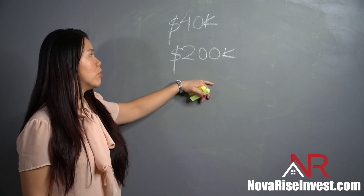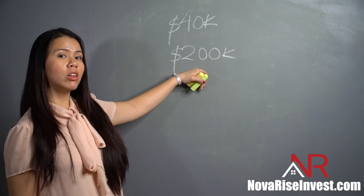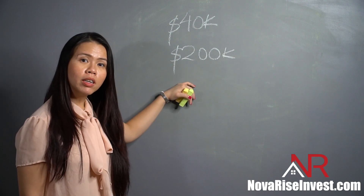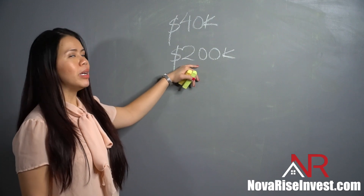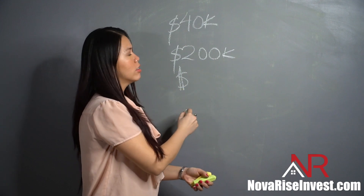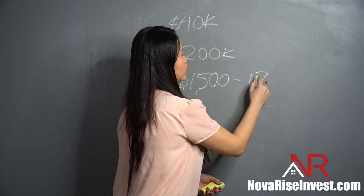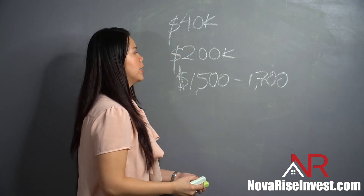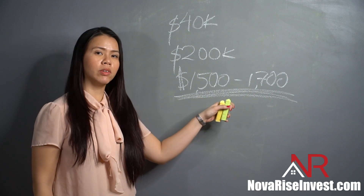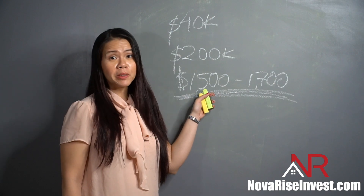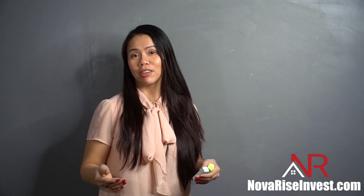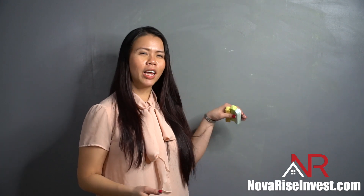A $40K down payment means you can afford up to $200,000 in a house. The next step is to look at what areas you can search and how much rent you'll get to cover that mortgage payment. Based on prior work I've done, on average a house worth around $200K will have a monthly mortgage — depending on your credit history — somewhere between $1,500 and $1,700. Based on this, you'll start searching different areas where you can actually rent it out for this amount.